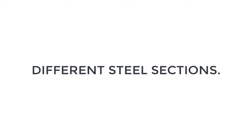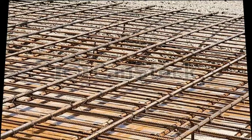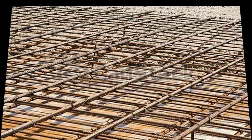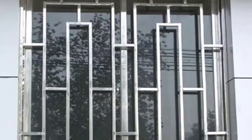Hey, welcome everyone. Today I'm going to be showing you the different steel sections we use in construction and what we use them for. Apart from using steel as reinforcement for concrete, it can also be used as beams or columns in steel frames and trusses. It can also be used for grid works like your window grid works.